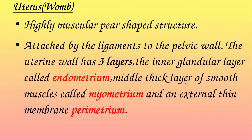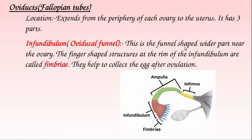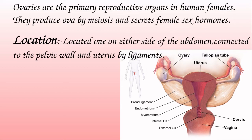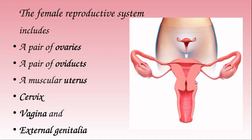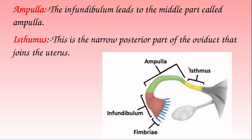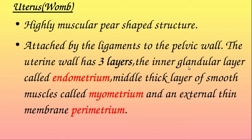The uterus is a highly muscular and pear-shaped structure. It is attached to the pelvic wall by ligaments and is present in the pelvic cavity.